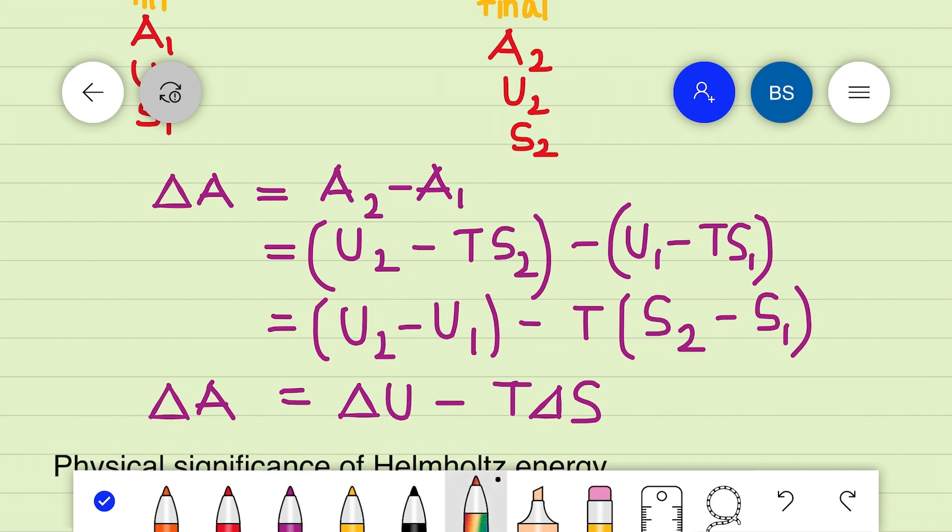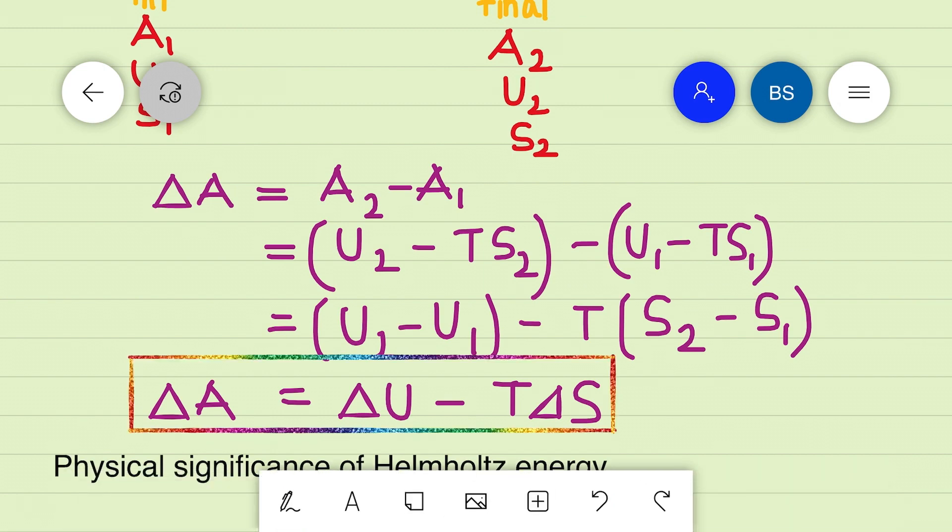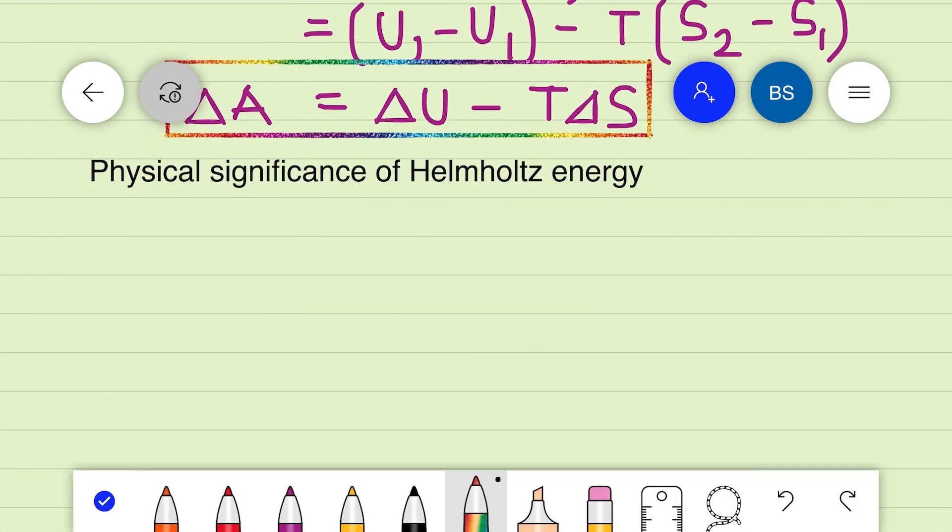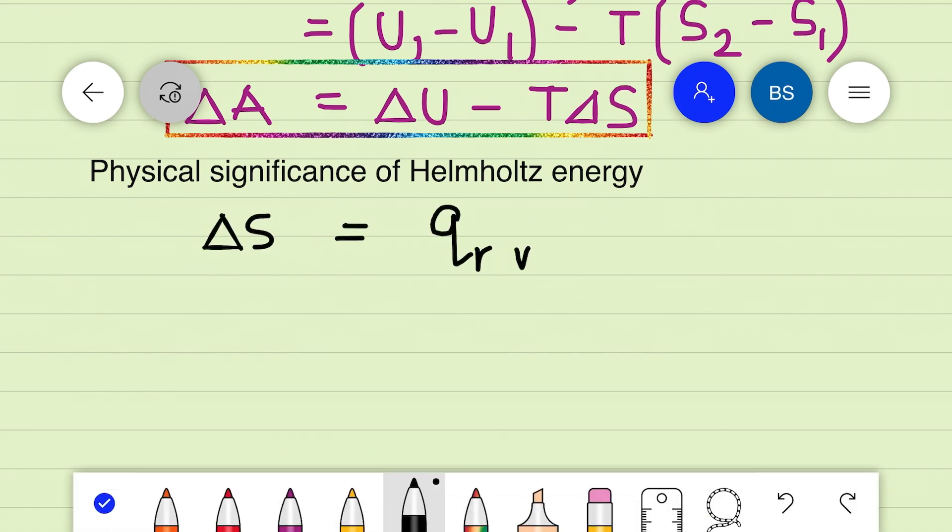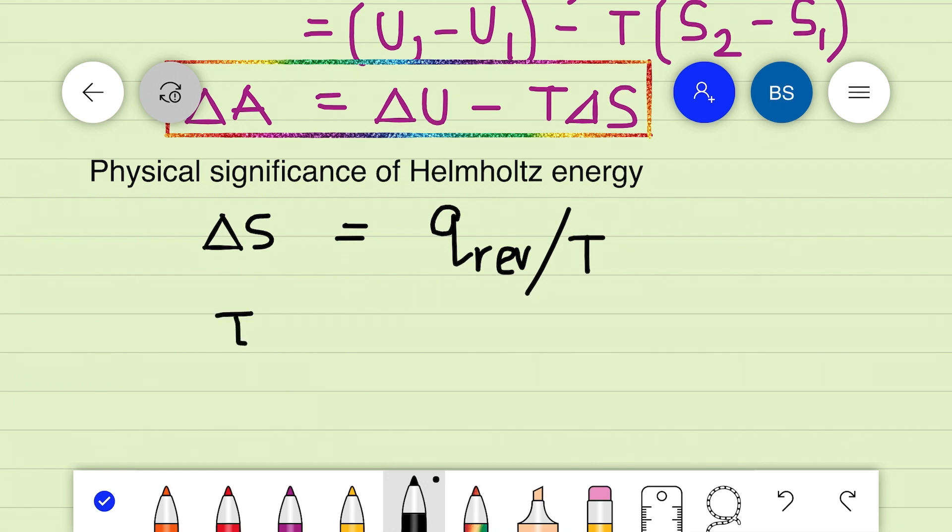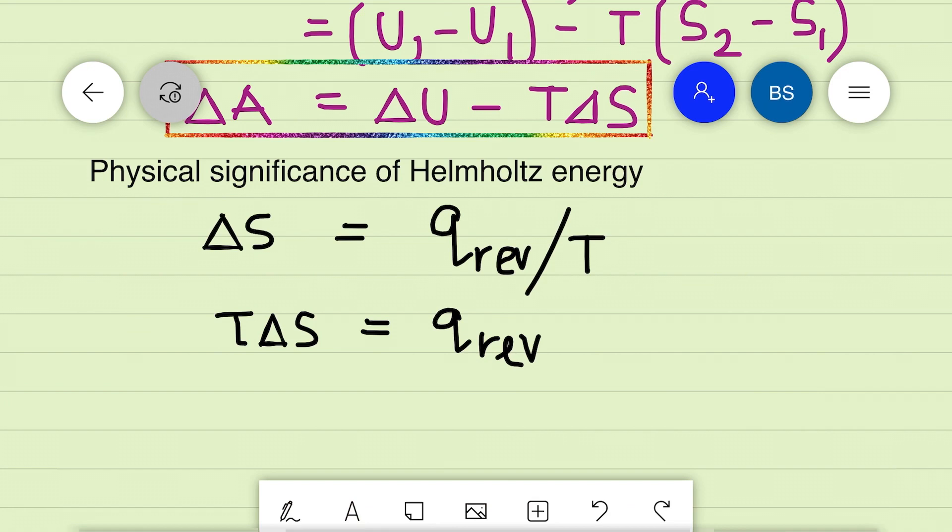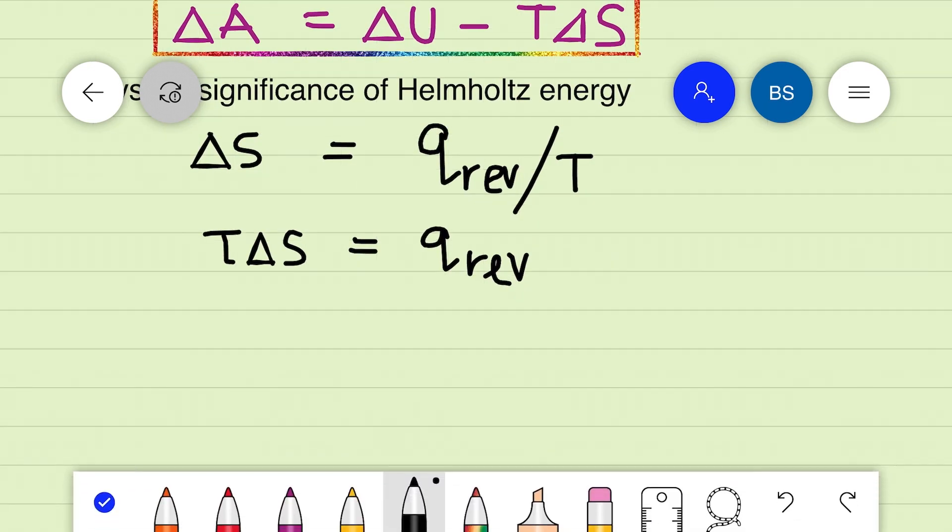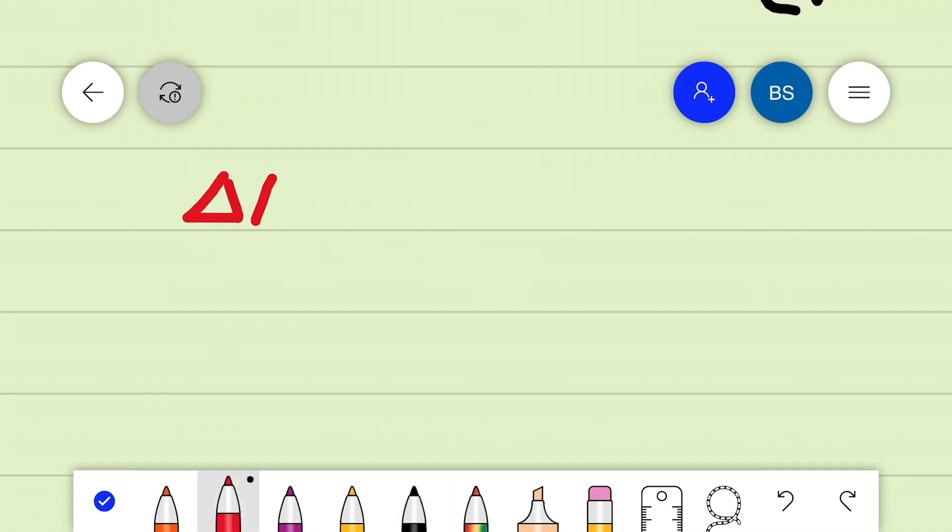Then what is the physical significance of Helmholtz energy? We know that for a reversible process, delta A is equal to delta U minus T delta S. When we substitute T delta S with q reversible, we get delta A equals delta U minus q reversible.